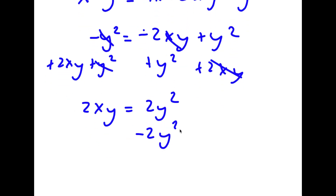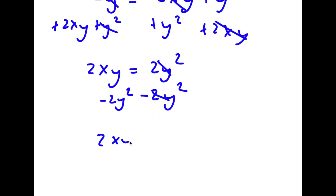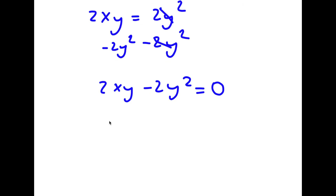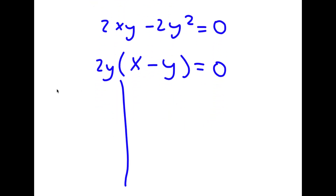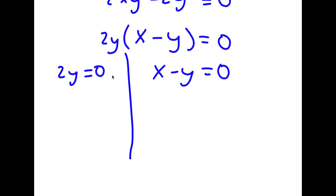I'm going to subtract 2y squared on both sides. These cancel out and I get 2xy minus 2y squared is equal to zero. I can factor out 2y, so now I have 2y times x minus y is equal to zero. This gives me two equations: 2y equals zero, and x minus y equals zero. For 2y equals zero, this means y is equal to zero.